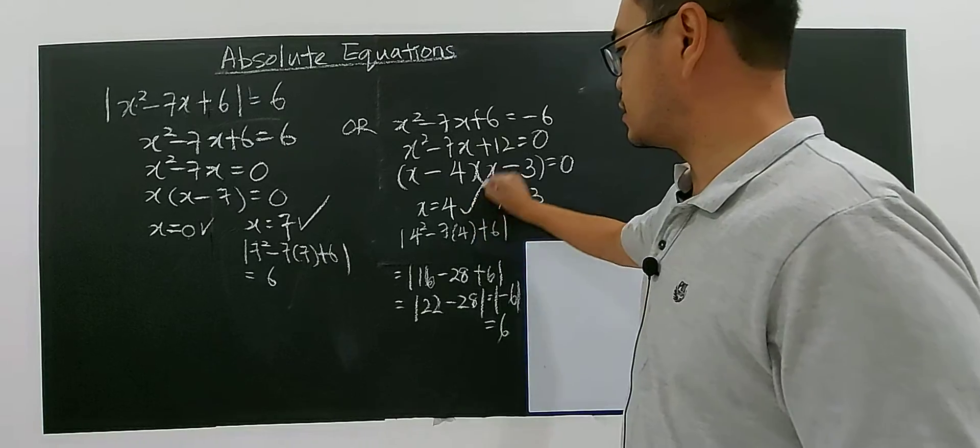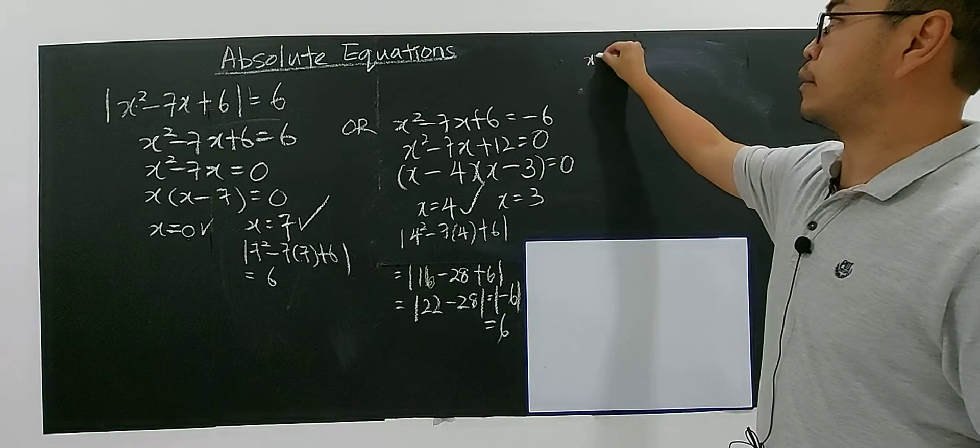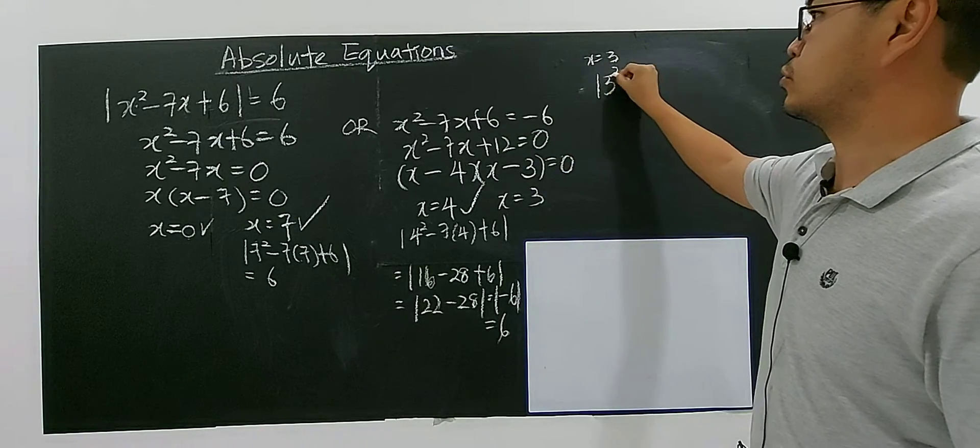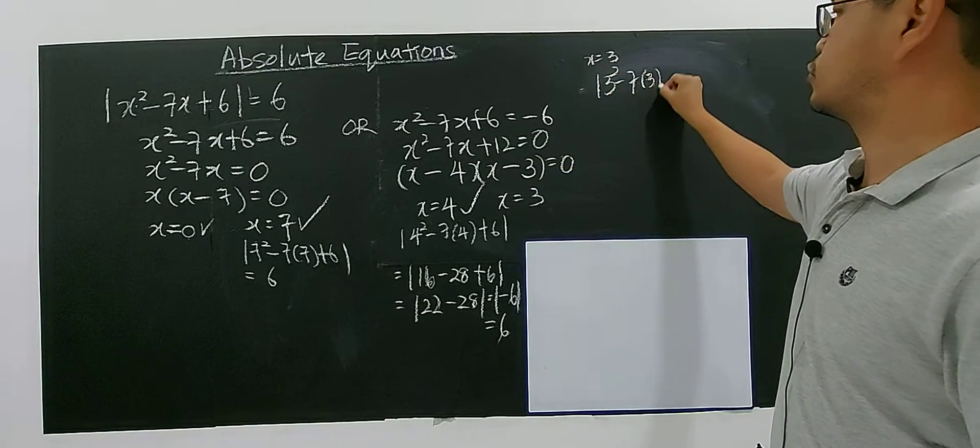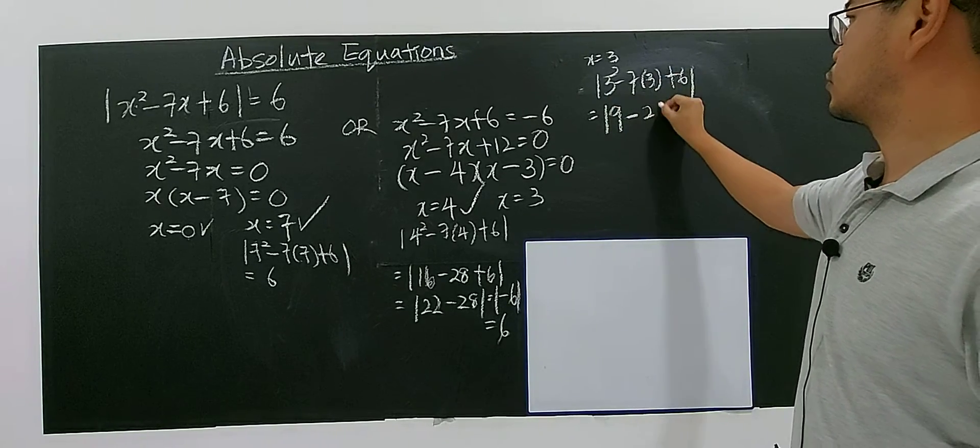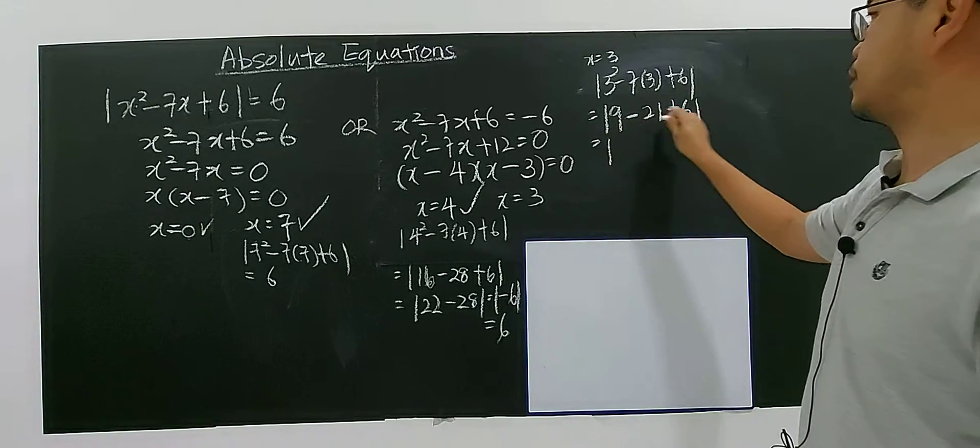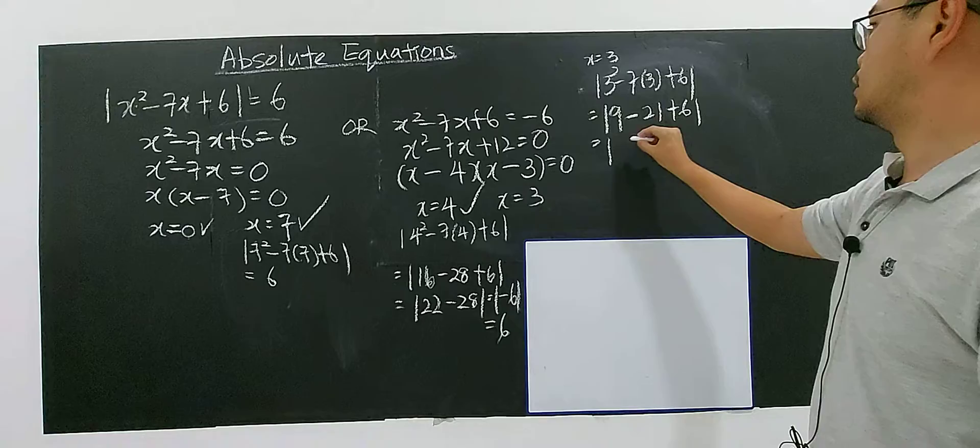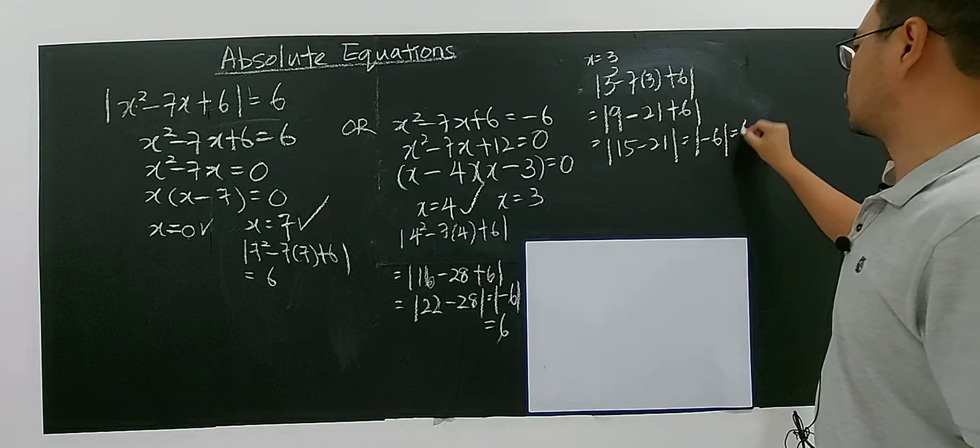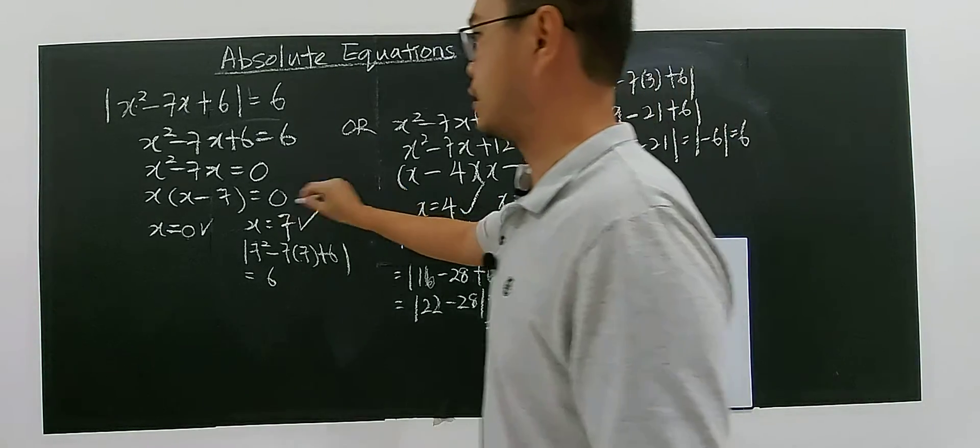Yes, this is also satisfied. How about x = 3? We put it inside. We have 3² - 7(3) + 6. So you have 9 minus 21 plus 6. This will be the final one. 9 plus 6 gives you 15 minus 21. You're also getting negative 6, which also gives you 6. Very happy, you have all solutions satisfied.